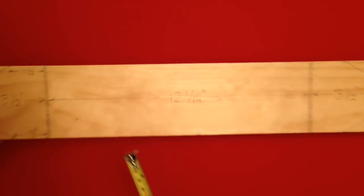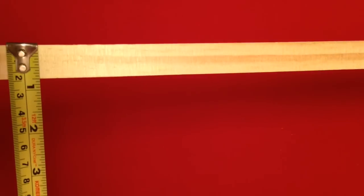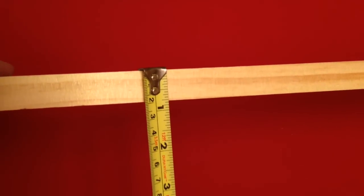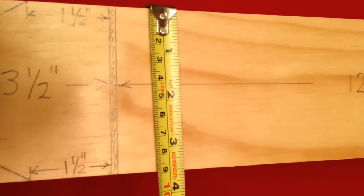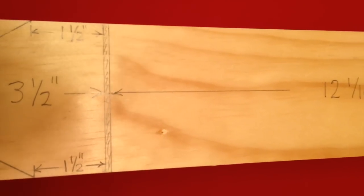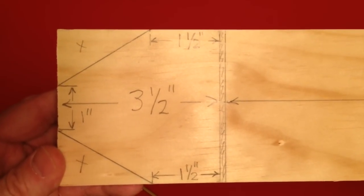The stand is made from 1 inch by 4 inch pine, actual dimensions 3 quarters of an inch by 3 and a half inches, cut into three pieces: two end pieces of length 3 and a half inches with the top corners cut away to improve accessibility to the magnets, and a base piece of length 12 and 1 sixteenth of an inch.